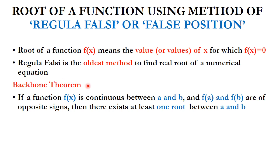The backbone theorem behind the Regula Falsi is the same as the backbone theorem behind the bisection method. That is, if a function f(x) is continuous between x = a and x = b, and f(a) and f(b) are of opposite signs, then there exists at least one root between a and b.